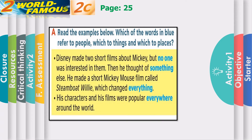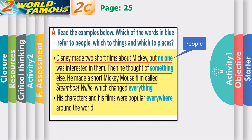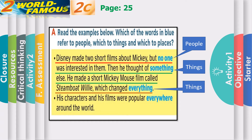Now open your student's book on page 25. Read the examples below. Which of the words in blue refer to people? Which to things? And which to places? The first sentence says: 'Disney made two short films about Mickey, but no one was interested in them. Then he thought of something else.' — 'No one' refers to people. 'Something' refers to things. 'Steamboat Willie, which changed everything' — it refers to things as well. 'His characters and his films were popular everywhere around the world' — places.